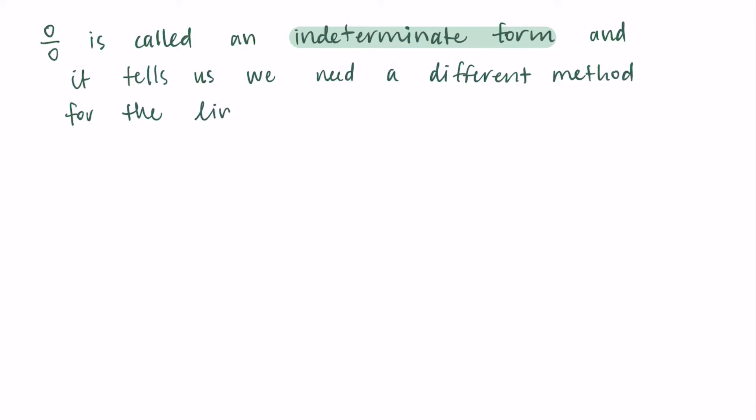We actually have specific vocabulary for things like 0 over 0, and we call them indeterminate forms. This tells us that we need a different method for the limit. We can't just use substitution. We ended up with this 0 over 0, which is an indeterminate form, and we're going to need another method. Let's get more into indeterminate forms, talk about what they mean, and then go through the method that you're going to use if you're substituting and you end up in one of these situations.